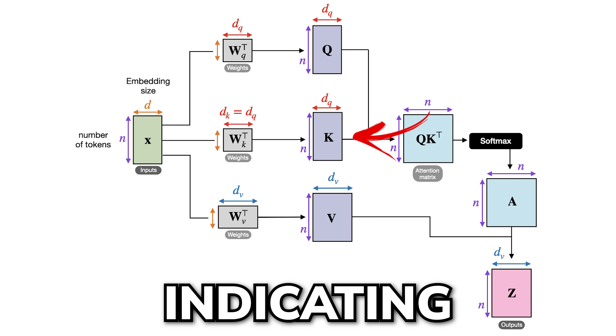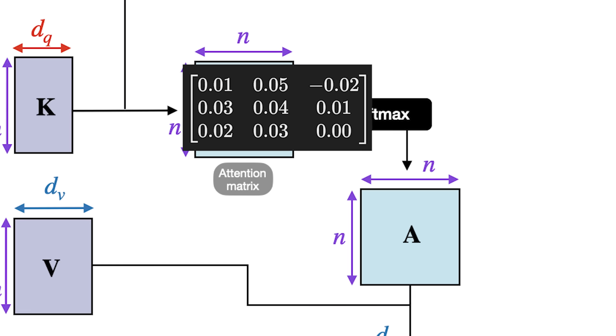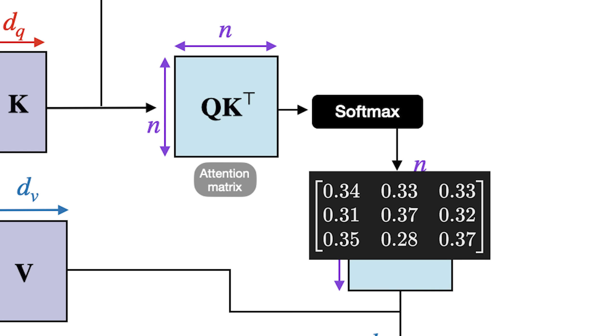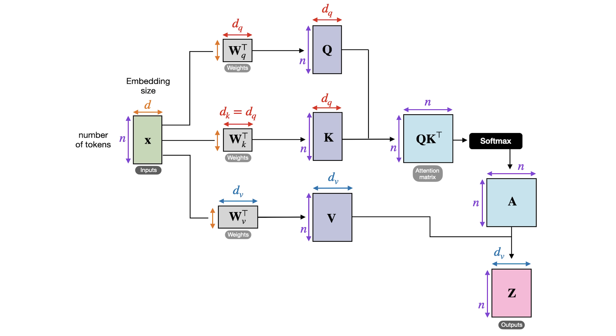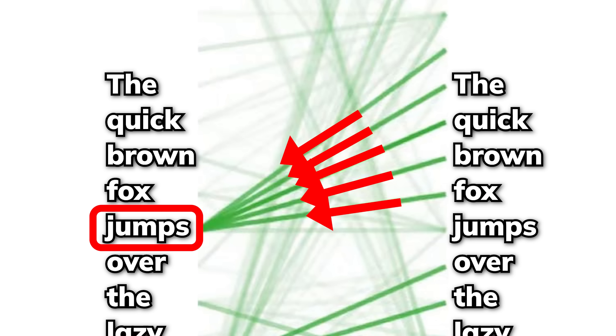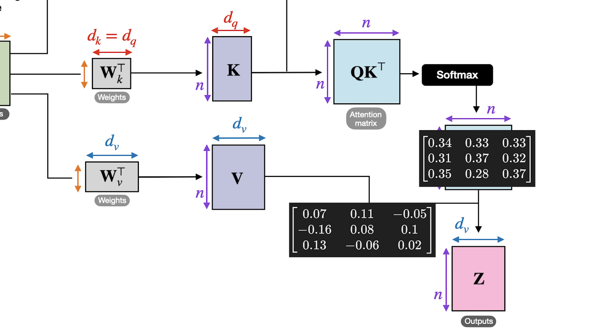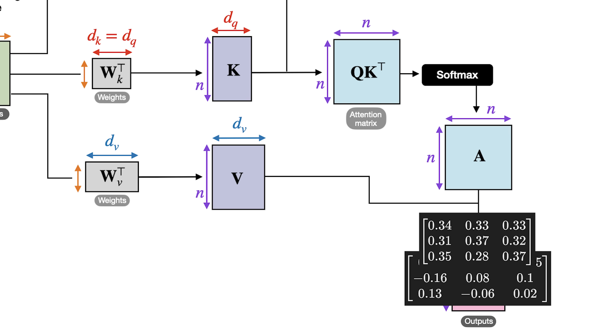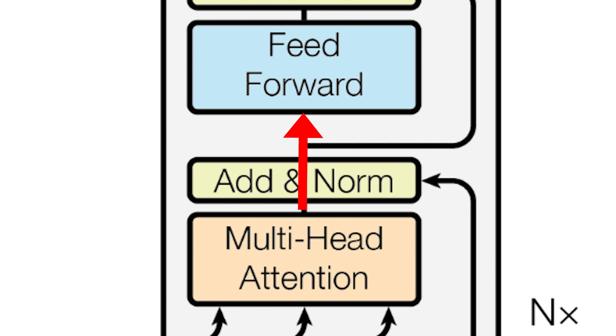The key serves as a descriptor, indicating what information the token can offer to others. These relevant scores are then passed through a softmax function to turn them into weights that sum up to one. This ensures that the attention mechanism focuses on the most relevant tokens while still considering the entire sequence. Once these scores are calculated, they are applied to the V vectors to extract the actual relevant content that should be passed to the next layer.